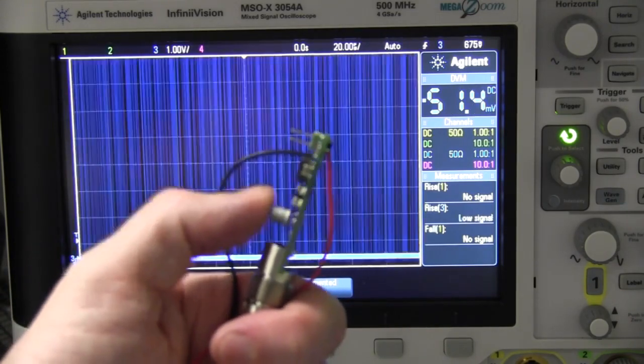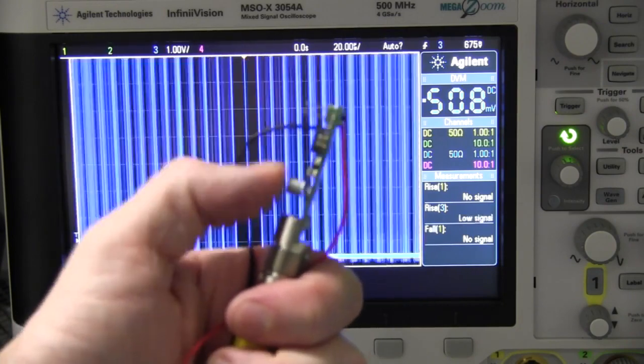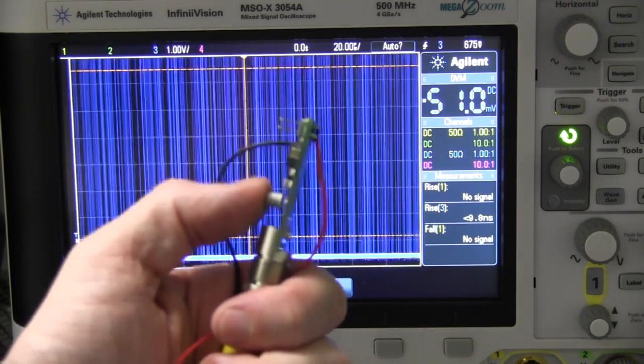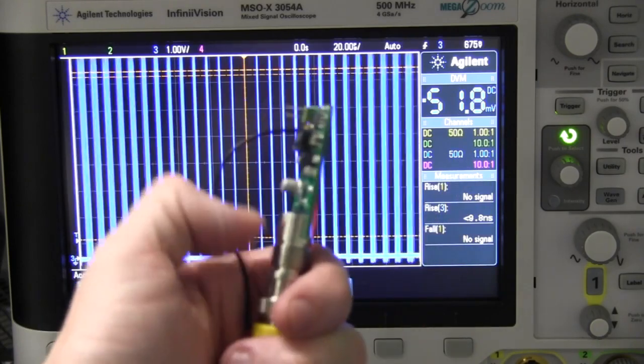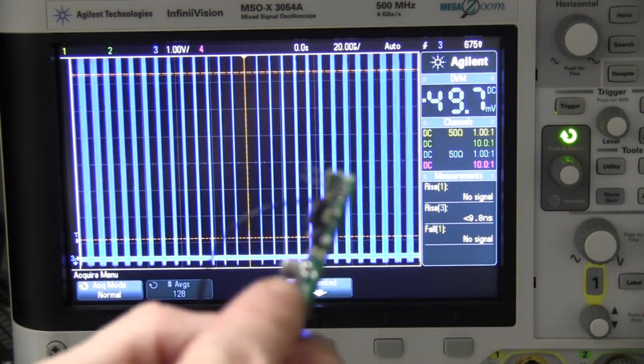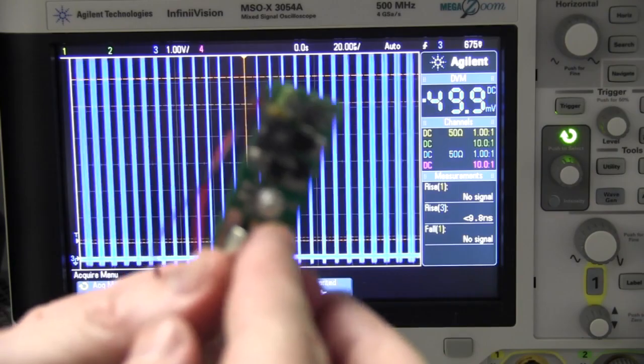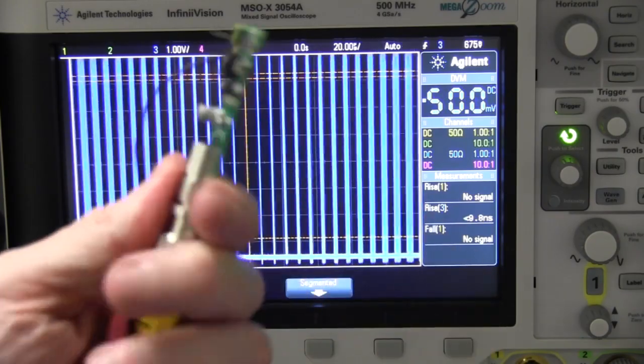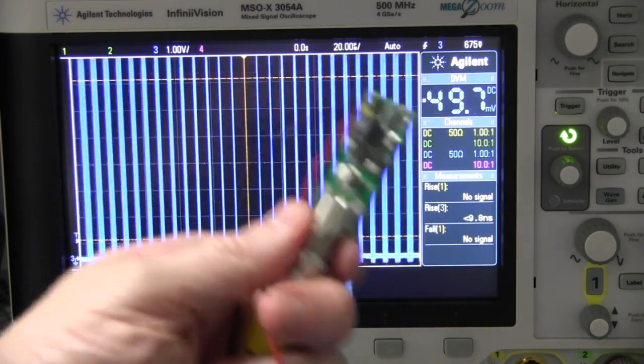You can see it start to expand there as the capacitive coupling between my finger and that can really kicks in, but I can just completely kill that. So that's the 50 hertz obviously pickup from my body there, just absolutely swamping that oscillator circuit and the avalanche breakdown of this transistor in here.